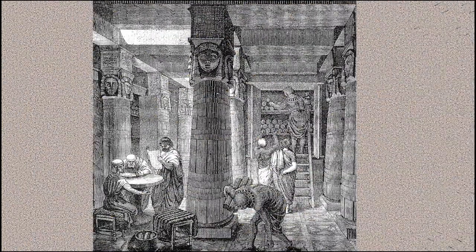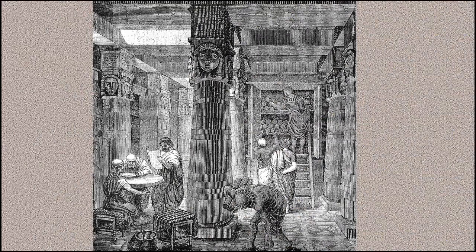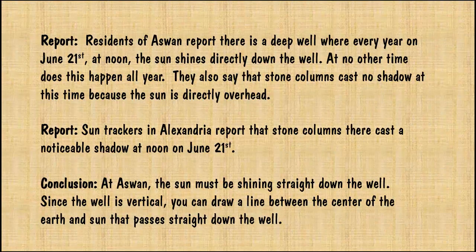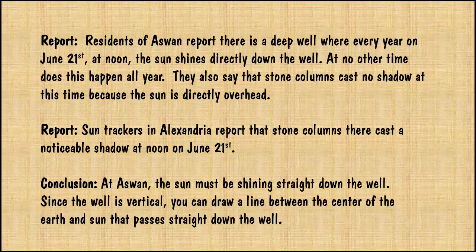As chief librarian, Eratosthenes would have had access to the historical archives of Egypt from ancient times. Legend has it that he noticed one report from the residents of Aswan, which stated that there was a deep well there with an interesting history. Every year on June 21, at high noon exactly, the overhead sun shines directly down the well, casting no shadow. At no other time of the year did this happen. This report caught his immediate interest.